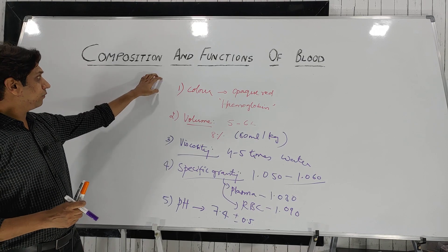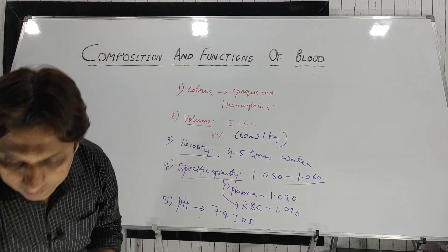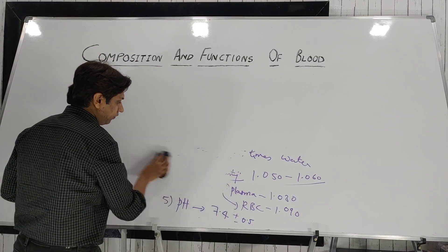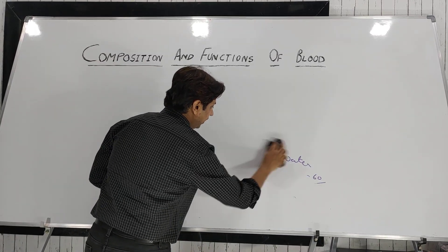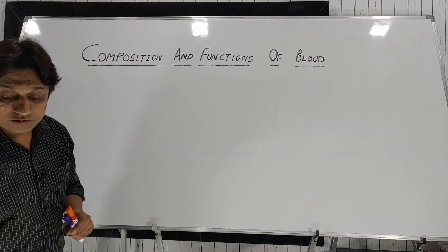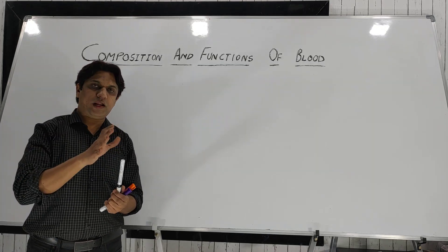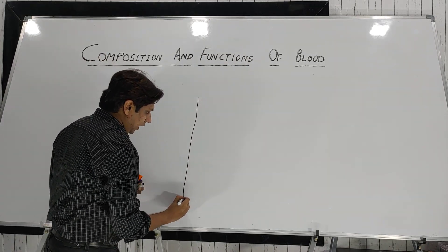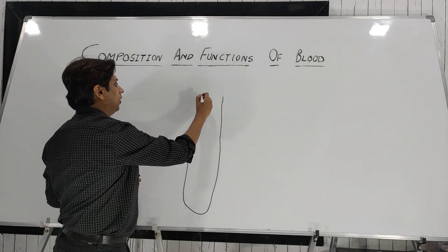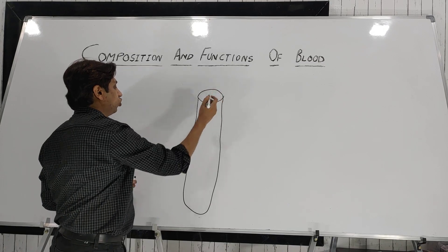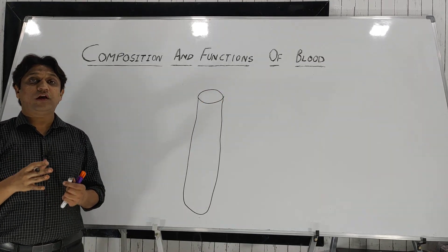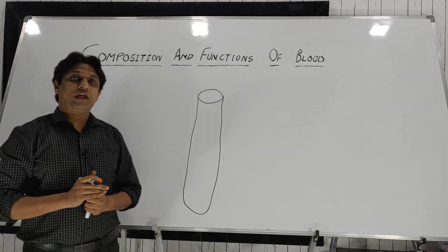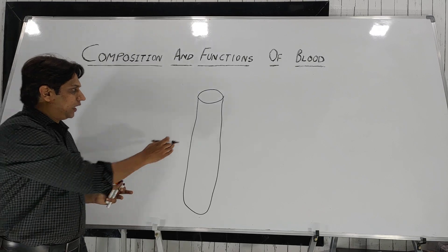After knowing these basics about blood, let's come to the topic — composition and functions of the blood. What exactly does the blood consist of? This 5 to 6 liters of blood circulating in the blood vessels — what is inside it? That is the composition or constituents of the blood. Consider if we take blood in a test tube — more specifically, anticoagulated blood. If we collect blood and keep it in a test tube, it generally gets coagulated and has a tendency to clot. To prevent this, we add a chemical known as an anticoagulant.